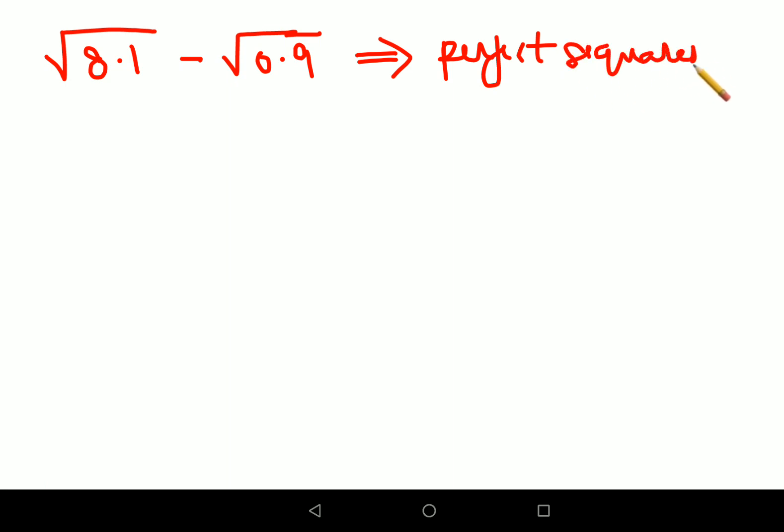If you have something like this, it's very easy. All you have to do is write them in perfect form. So we can write this as √(81/10) minus this can be written as √(9/10).